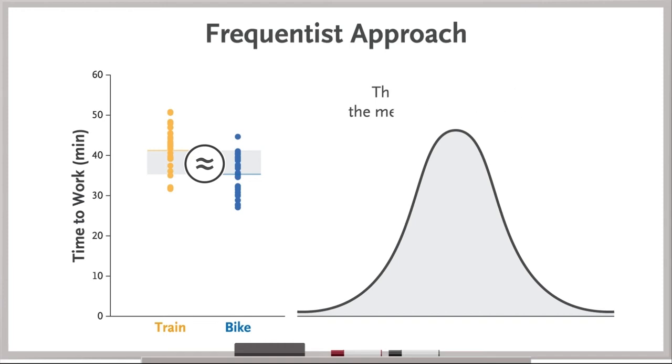This assumption of no difference is called a null hypothesis. You could calculate the likelihood of finding the difference you observed, or an even larger one, if the null hypothesis were true.